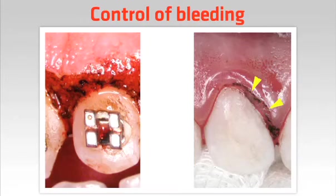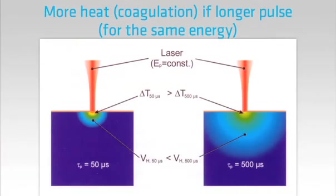In situations where the tissues are very inflamed and more vascular we need to get more heating to give us greater coagulation. We can do this by using longer pulses or continuous mode and at the same time pulling the tip away from the surface to spread the beam out. As shown in this simple cartoon, a short pulse has a limited action on adjacent tissues but a longer pulse or continuous mode gives greater collateral heating.